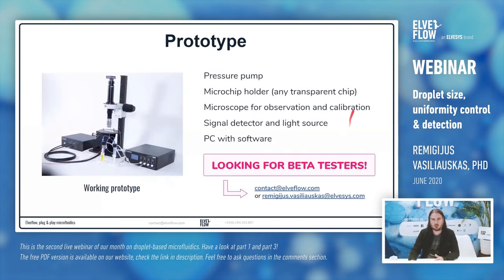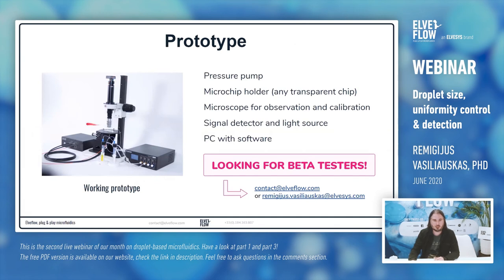We are not doing just theoretical work — we have done practical work and already created a prototype. It consists of a pressure pump, a microchip holder where you can place almost any chip that is transparent to light — so we are not limited to specific chips — a microscope to observe droplet production, a signal detector and illumination, and of course a computer for all the software and feedback loop. At the moment we are looking for beta testers, so please contact us at AlviFlow or reach me directly.